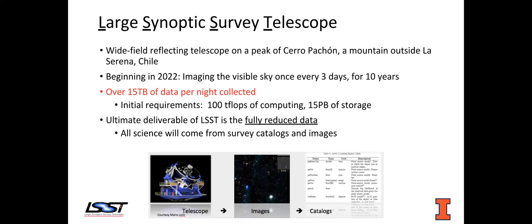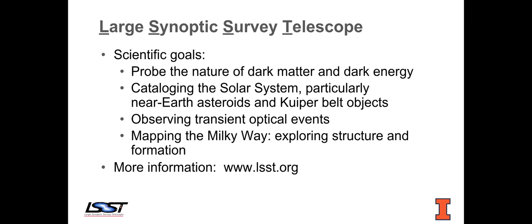Really what LSST is delivering is not just a camera and telescope — they're delivering data to the scientists along with the survey catalogs that come along with the images. When you're imaging the nighttime sky at that frequency, you're looking for things like transient events. You are looking for items or bodies in the nighttime sky that perhaps you didn't know about — so cataloging, mapping the Milky Way, and a big part of the scientific goal is to probe the nature of dark matter and dark energy.